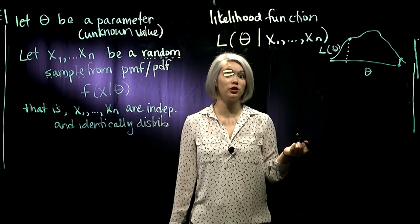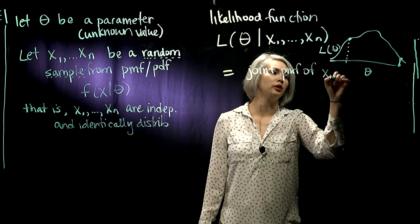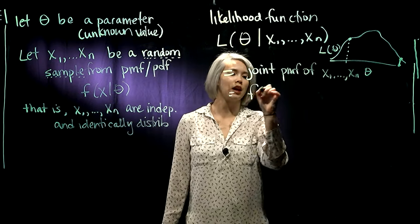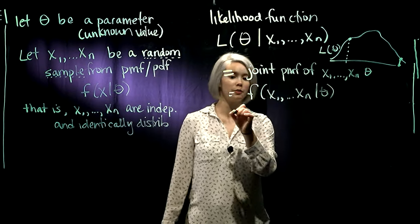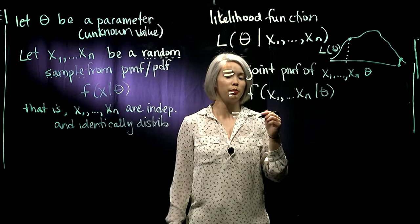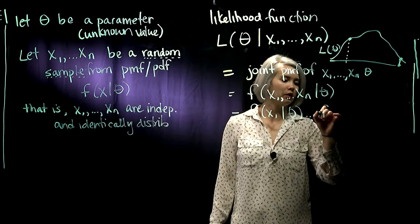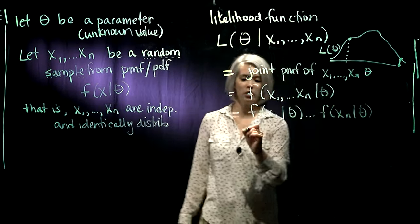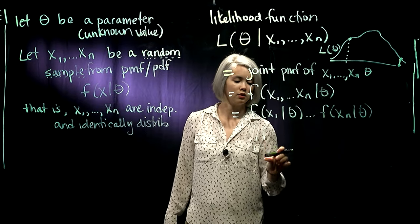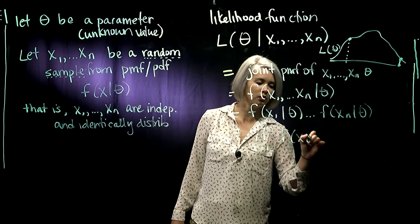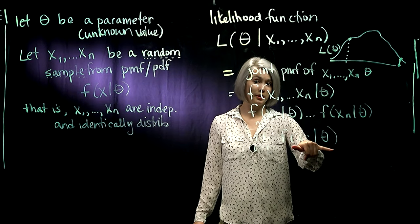So our likelihood function is just the joint PMF or PDF of our random sample. So we have x1 through xn given theta. But we know that they're independent, so we can split this up into the product of univariate. So most of the time we can just write it like this. So it's just the product of each of these univariate PMF or PDFs.